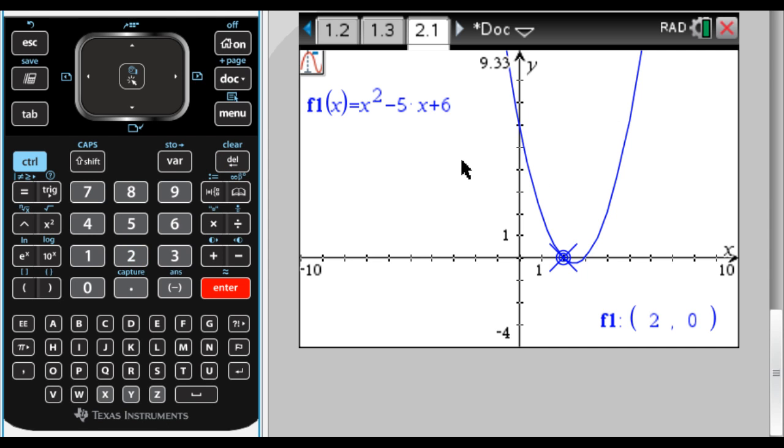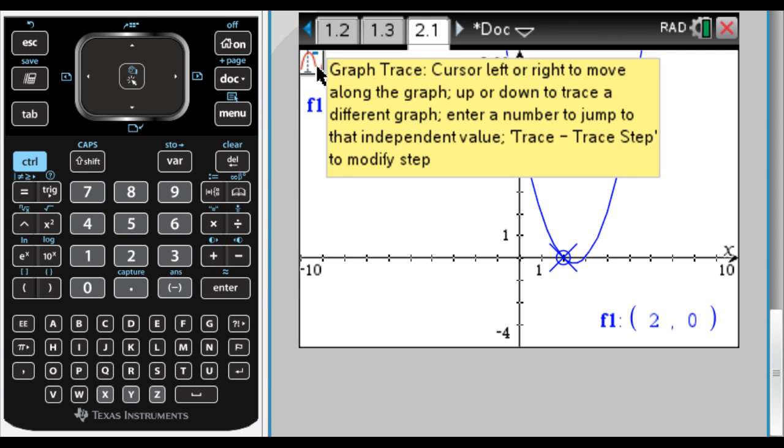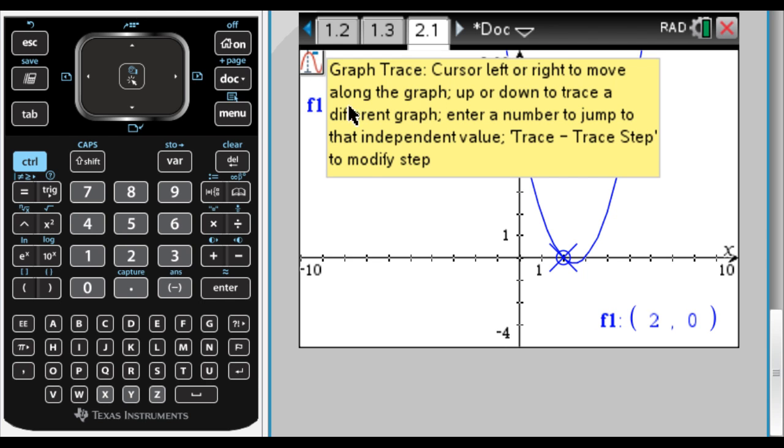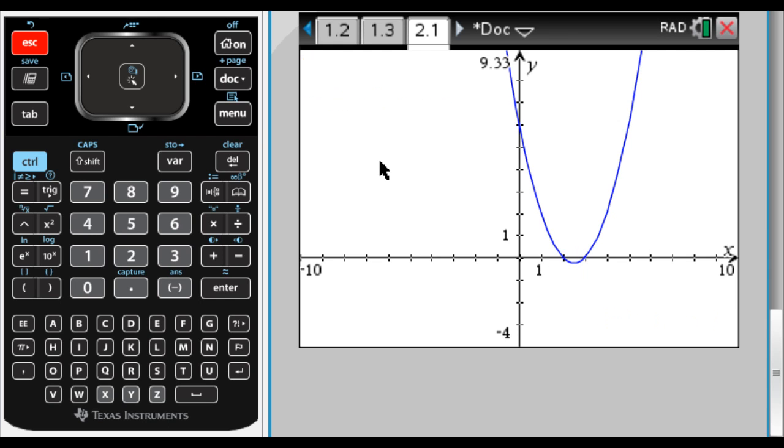So let's say that I wanted to find where this graph intersects the x-axis. Okay, so first thing I've got to do is I've got to get rid of, well, one of them is I already found one of them, actually it's 2, 0, but I need to get rid of this. To get rid of this, you hopefully remember, you press escape.